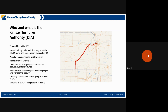It goes through the cities of Wichita, where I'm currently located, Emporia, Topeka, Lawrence, and obviously ends at Kansas City, Kansas. Where I'm currently sitting is in the Wichita, Kansas headquarters building. We basically run the entire turnpike from here. There's also a small office in Topeka.